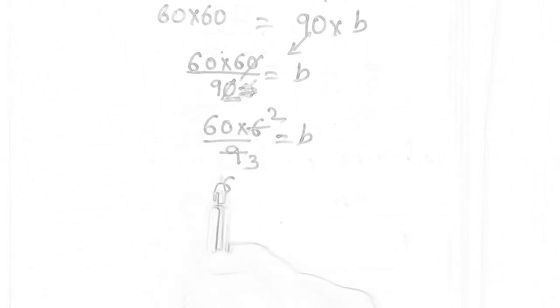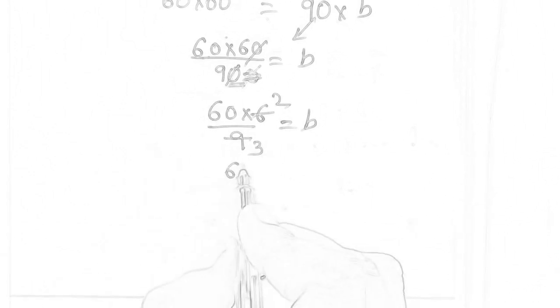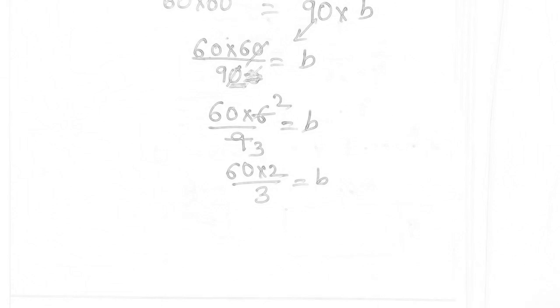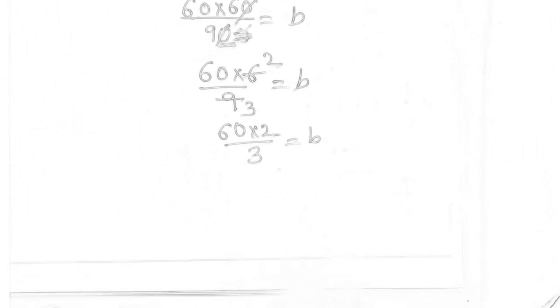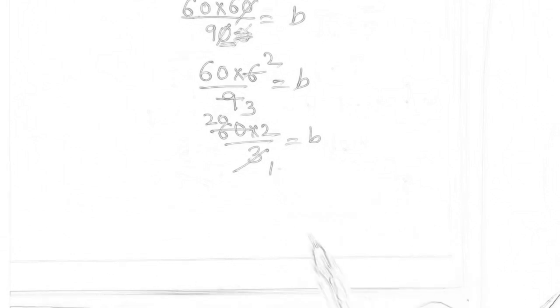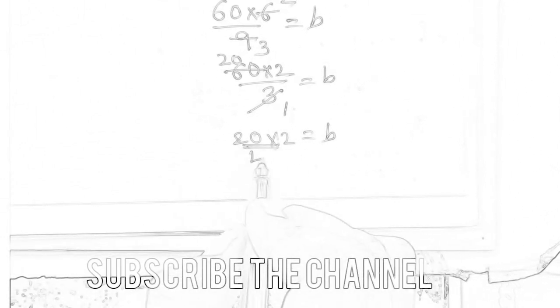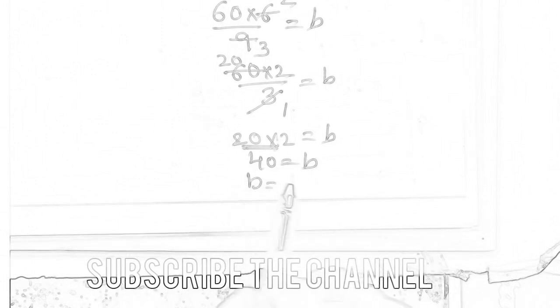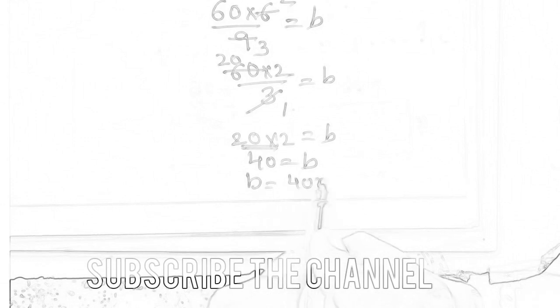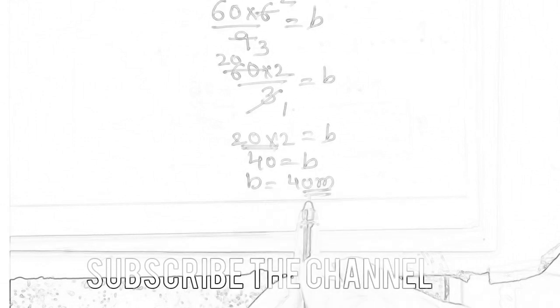Stepwise: 60 into 2 upon 3 equals b. So once again, 320 — okay, that is equal to b. What will you get here? 20 into 2 equals b, and then 20 into 2 equals 40, equals b. What is b? That is the breadth of the rectangle — it is 40 meters. So, this is the breadth of the rectangle.